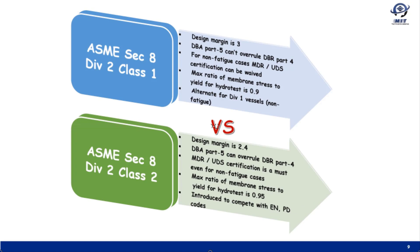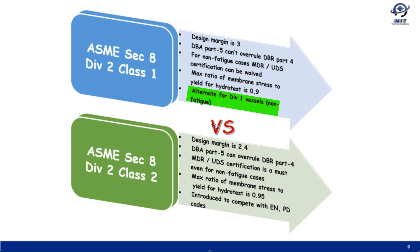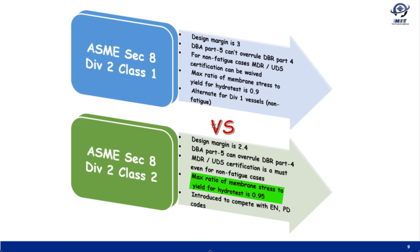Comparing ASME Section 8 Division 2 Class 1 and Class 2: For Class 1, the design margin based on tensile strength is 3. DBA (design by analysis) Part 5 cannot overrule design by rule Part 4. For non-fatigue cases, MDR and UBS certification can be waived. The maximum ratio of membrane stress to yield for hydro test is 0.9, and it can be used as an alternate for Division 1 vessels. For Class 2, the design margin is 2.4. DBA Part 5 can overrule design by rule Part 4. MDR and UBS certification is a must even for non-fatigue cases. Maximum ratio of membrane stress to yield for hydro test is 0.95. Class 2 is specifically introduced to compete with rival codes like EN13445 and PD5500.